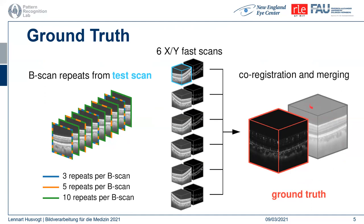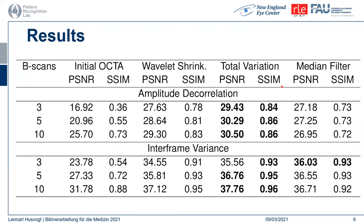This table shows results for the reconstruction compared against the ground truth. Initial OCTA, on the left, refers to images computed using amplitude decorrelation and interframe variance without our reconstruction method. The rows correspond to the number of B-scans used for reconstruction. The other columns — wavelet shrinkage and total variation — indicate the regularizers used during reconstruction. We also compared against median filtered results, where the median filter was applied in 3D on the initial OCTA data. PSNR and structural similarity metrics compare against the ground truth.